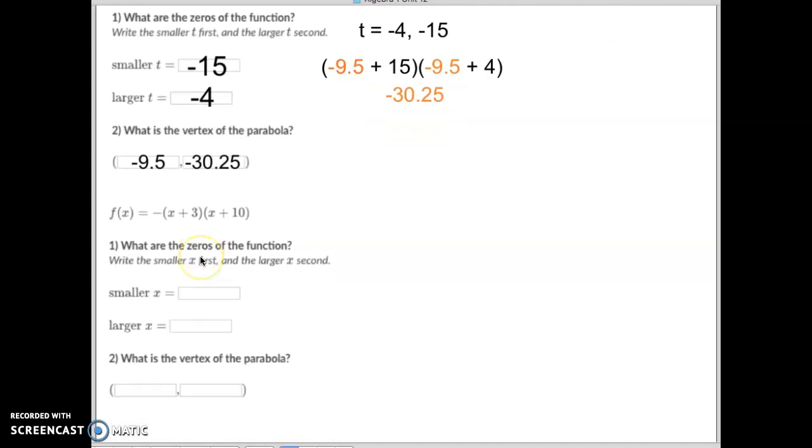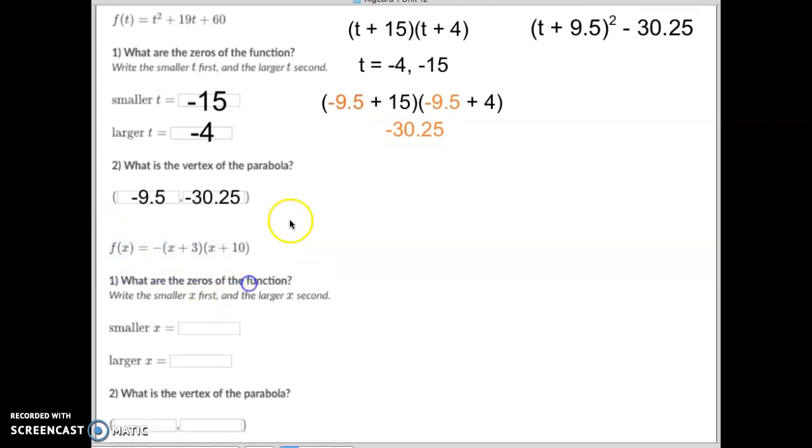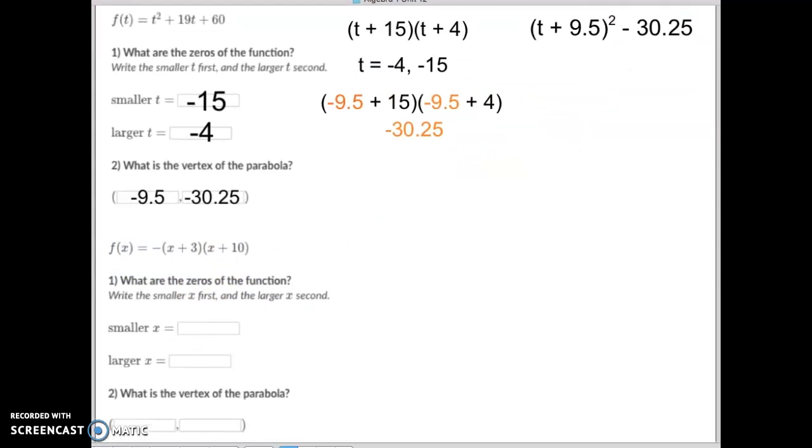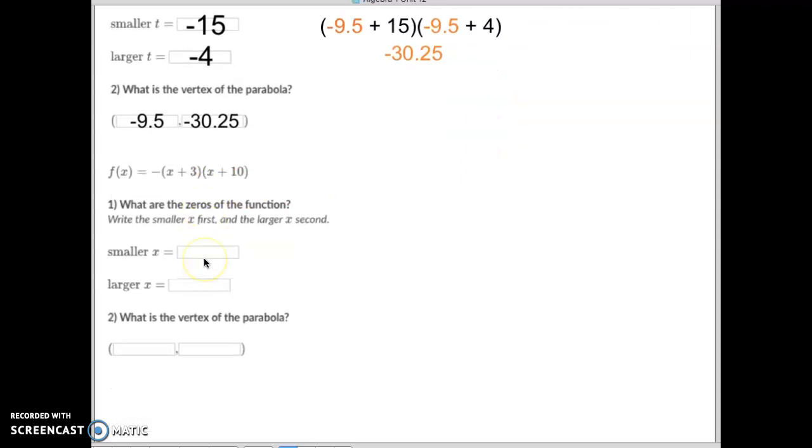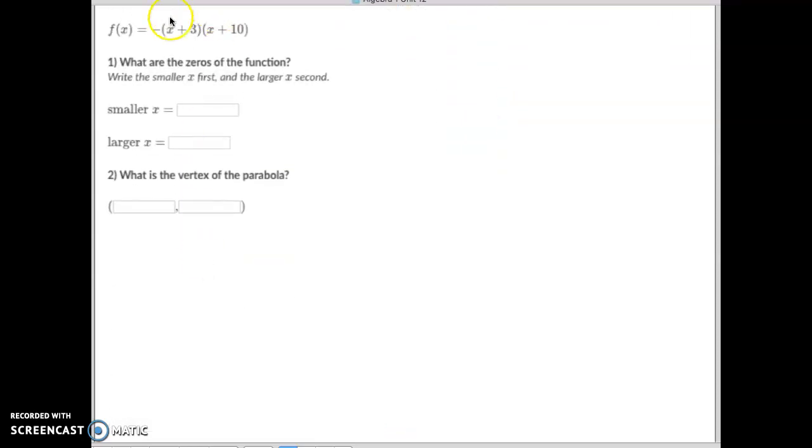All right, next one. This one is already in factored form, which was just like this one right up here is in factored form, and then you work it through. So from this factored form on this one, I know I can apply zero property product to get negative 3, zero property product to get negative 10, and those happen to be my two x intercepts.